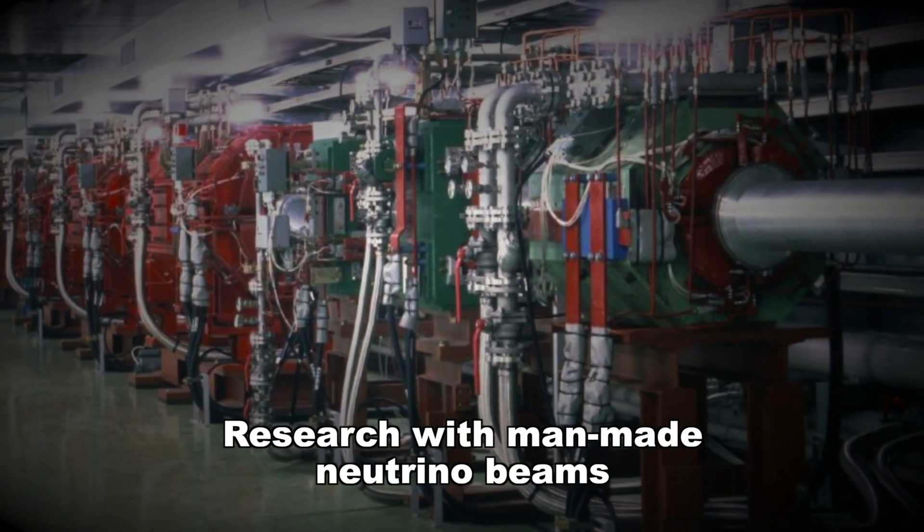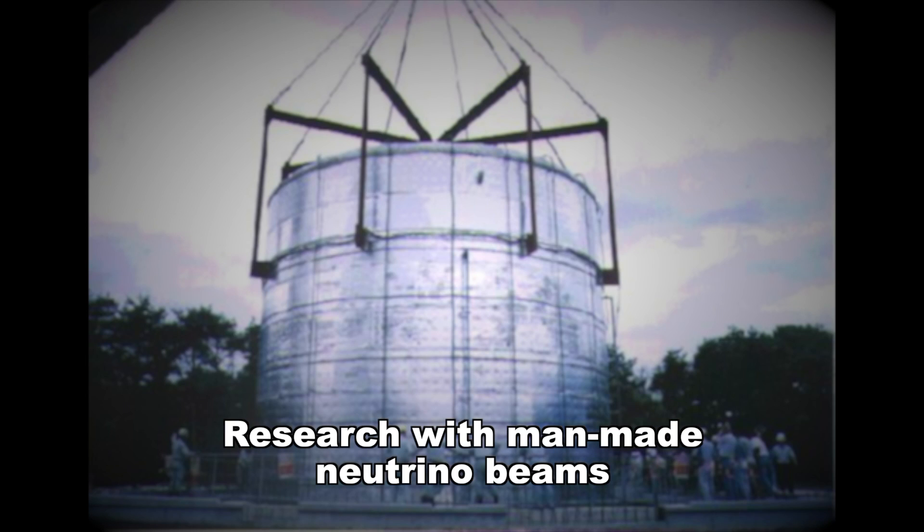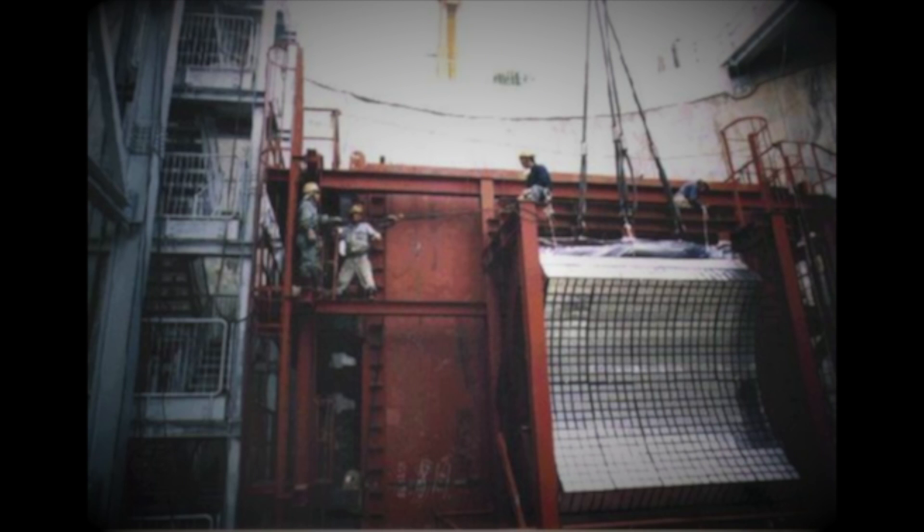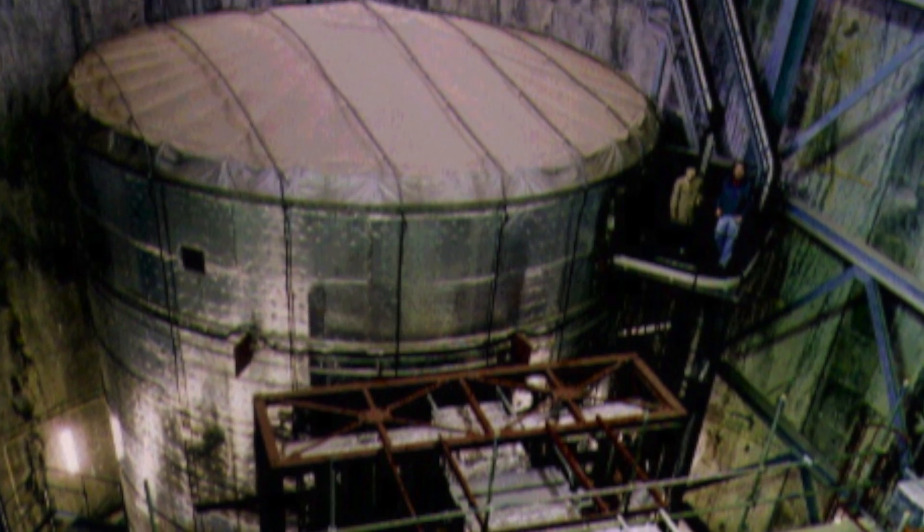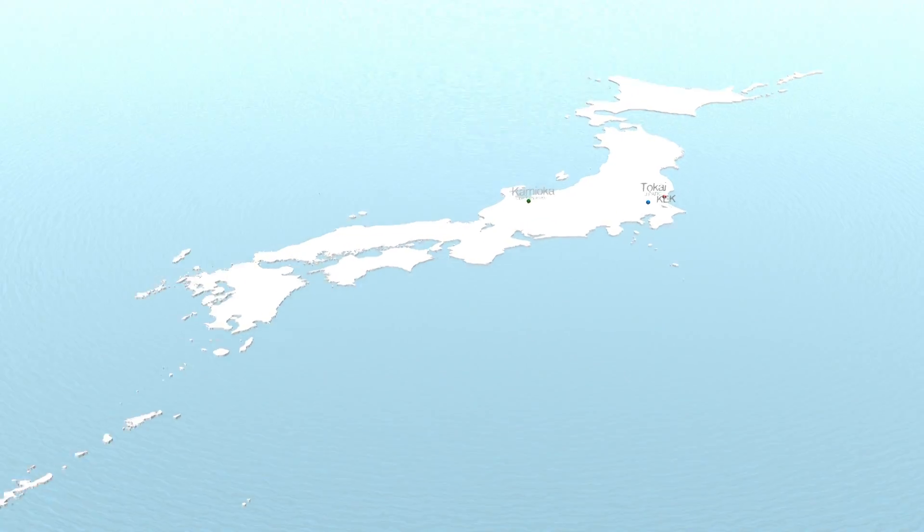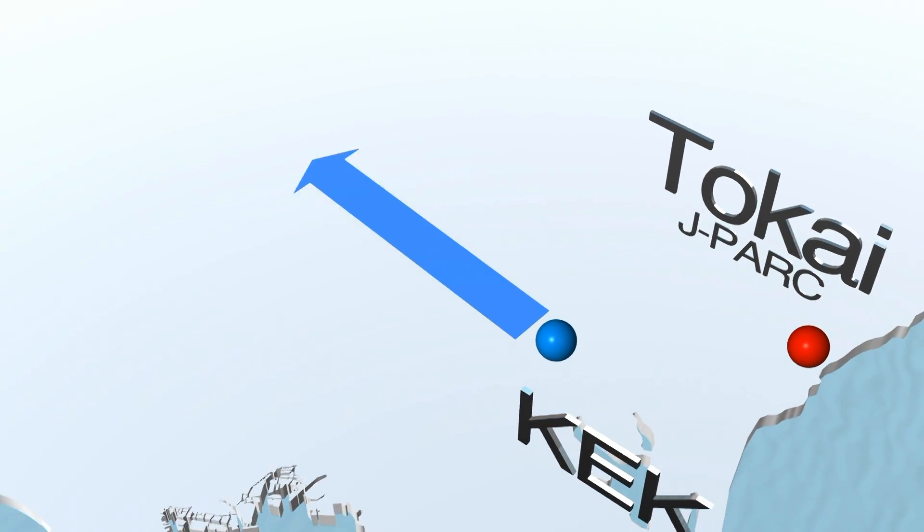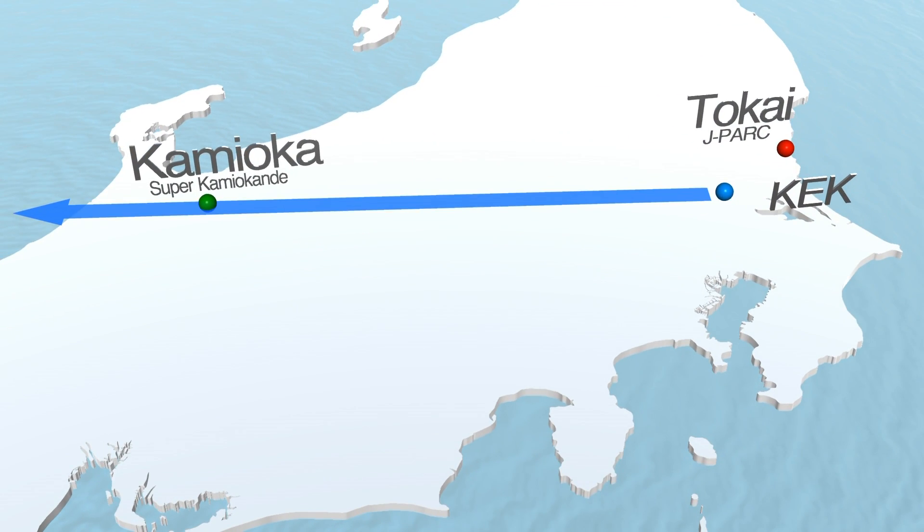Experiments using beams of neutrinos from accelerators traveling hundreds of miles before being studied have been a focus of research for the past decade or so. Physicists found they needed well understood neutrino sources that they could manipulate as well. The first such experiment was called K2K. A neutrino beam produced at the KEK Accelerator Laboratory in Tsukuba was sent towards the Super Kamiokande detector located in the Kamioka Mine in Hida City, hence the name KEK to Kamioka, or K2K.